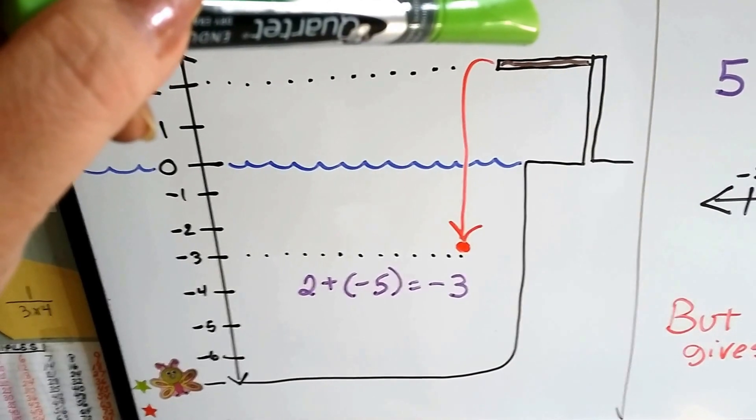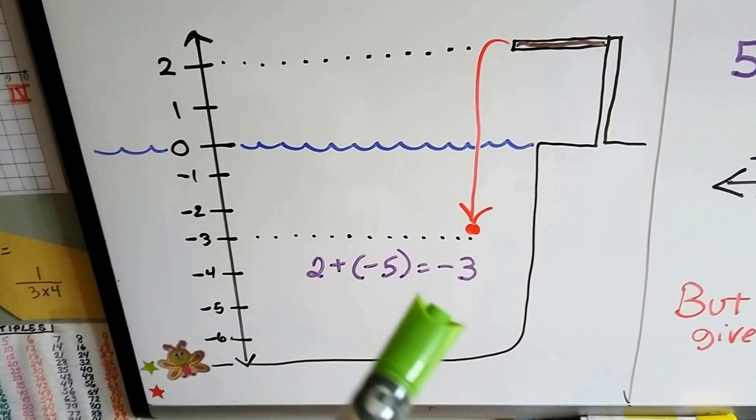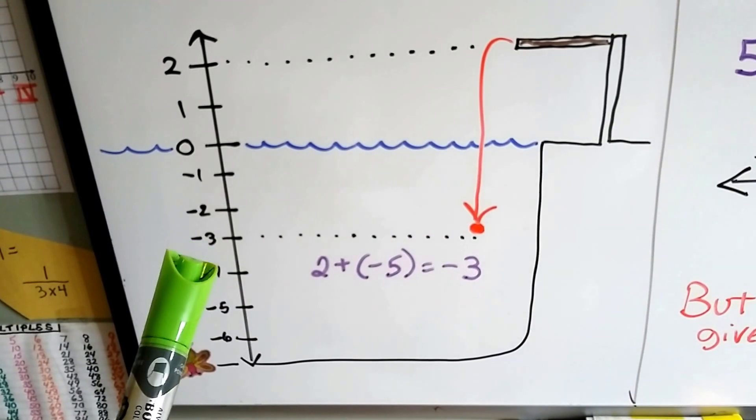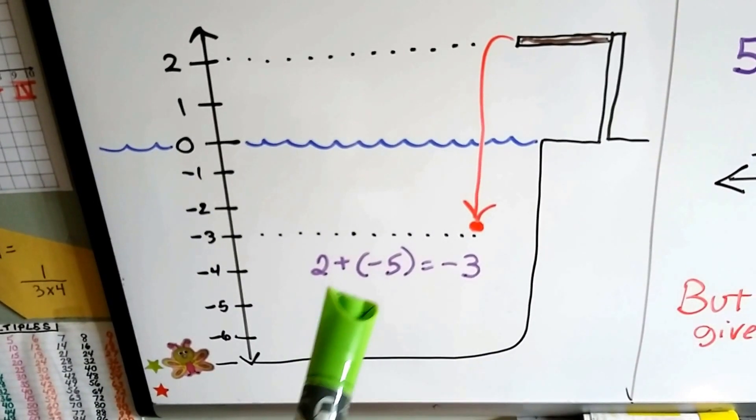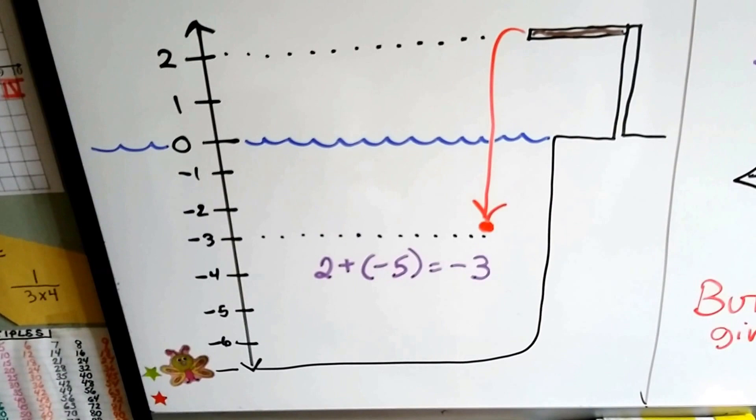You're 2 feet above the water, and we're going to add a 5-foot dive. When you dive 5 feet, you're going to end up being at 3 feet below the water. So 2 plus negative 5 equals negative 3.